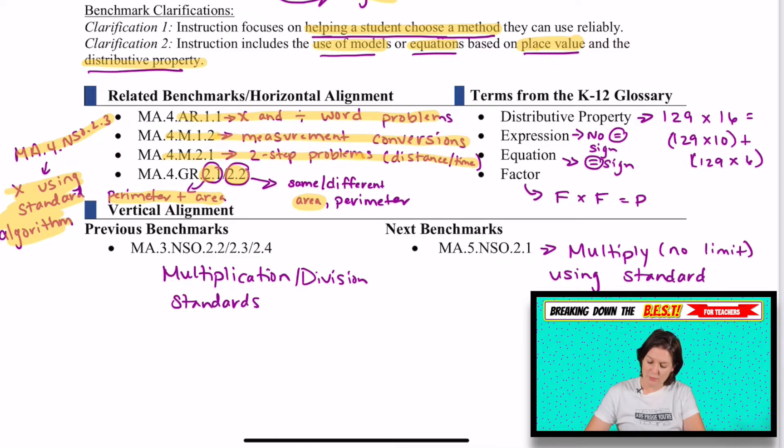Some vocab that you need to know. The distributive property is where we take one factor and we break it down. So in this case, if we had 129 times 16, the 16 could be broken down into 10 and 6, and if we could find 129 times 10 and 129 times 6 and add those together, that's using the distributive property to help us. Expression just means that there's no equal sign present. Equation means that there is an equal sign present, and a factor is what you are multiplying by. The factor times factor equals the product.